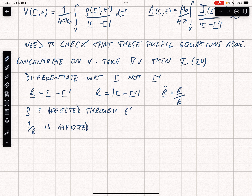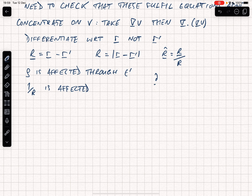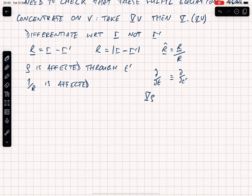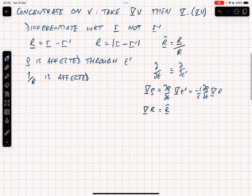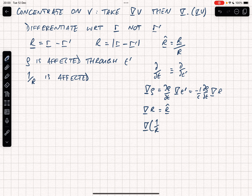Let's collect useful results. First, d/dt is directly equivalent to d/dt'. The gradient of rho equals (d rho/dt) times grad t', and since t' involves |r minus r'|, that equals minus 1 over c times (d rho/dt) times grad R. The gradient of R is simply R-hat. The gradient of 1 over R equals minus R-hat divided by R squared. We'll come up with a few more results later.